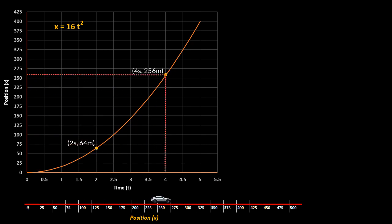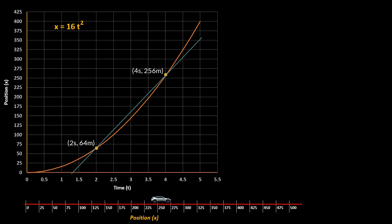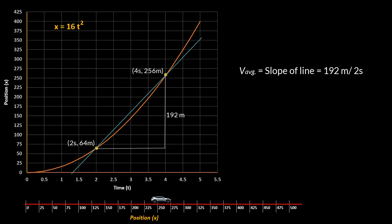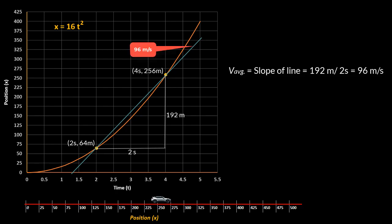Now you are asked the average velocity between t = 2 seconds and t = 4 seconds. As we learned earlier, to find v average, all you need to do is find the slope of the line connecting these two points. The slope here is ds upon dt, or 192 meters upon 2 seconds, which equals 96 meters per second.